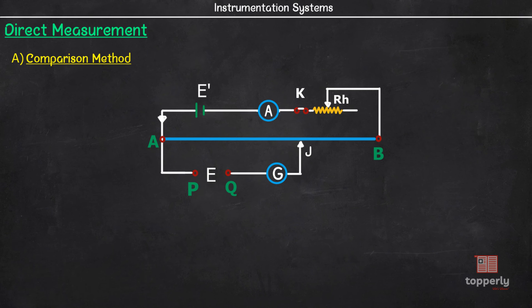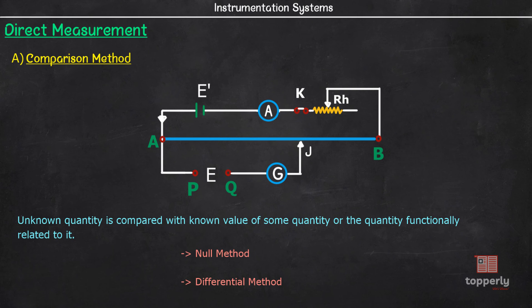So in comparison method, the unknown quantity is compared with the known value of some quantity. This measurement by comparison can be of two types: null type and differential type.